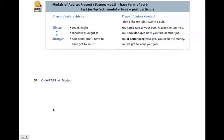Modals of advice — present and future: use a modal plus a base form of the verb. For past or perfect, use a modal plus have plus a past participle. For example, present context: 'I don't like my job, I want to quit.' Your friend can give advice, starting from weaker modals — could and might — followed by the base form: 'You could talk to your boss. Maybe she can help.' Or, 'You might talk to your boss.'